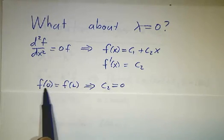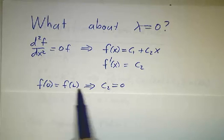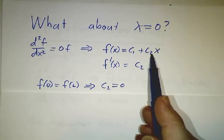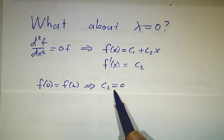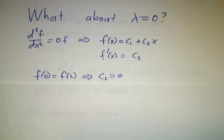So the equation f(0) equals f(L) tells you that c₂ has to be 0. It says c₁ equals c₁ plus c₂L, so c₂ is 0. And if c₂ is 0, then the second equation is all automatically satisfied.